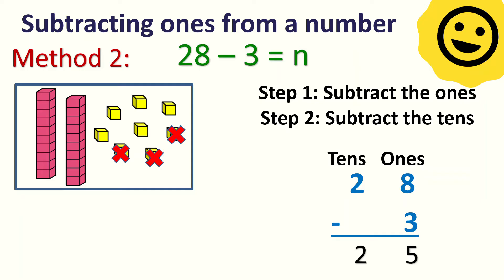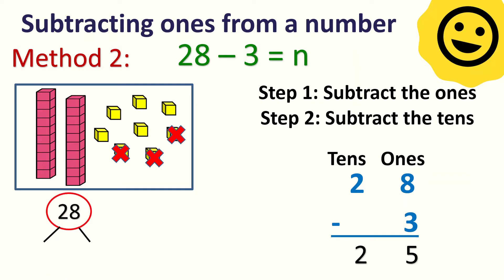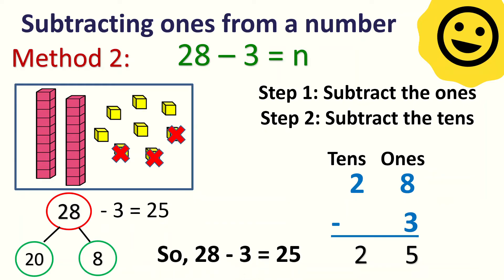We can also use number bonds. We can break 28 into 20 and 8, then subtract 3 from 8, that is 5. So, 20 plus 5 is 25. So, 28 minus 3 equals 25.